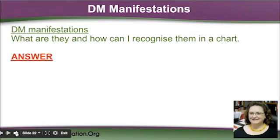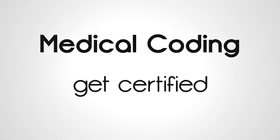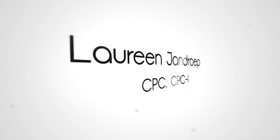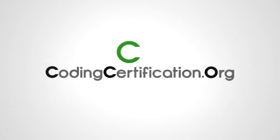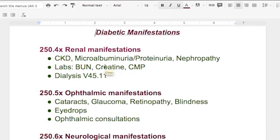Diabetic manifestations — what are they and how can I recognize them in a chart? It's one thing to have diabetes, but diabetics tend to have other organ problems because it affects the entire body. There are a few manifestations that you need to be aware of.